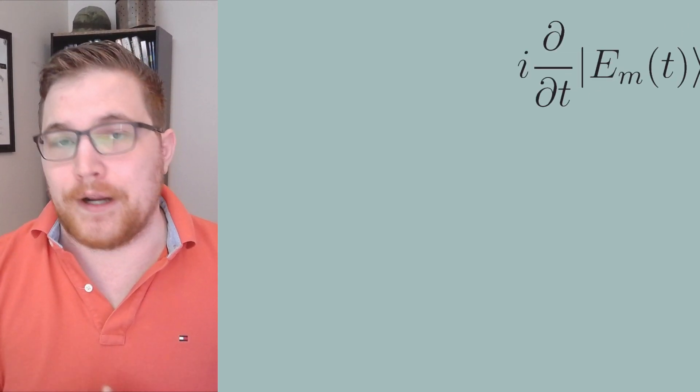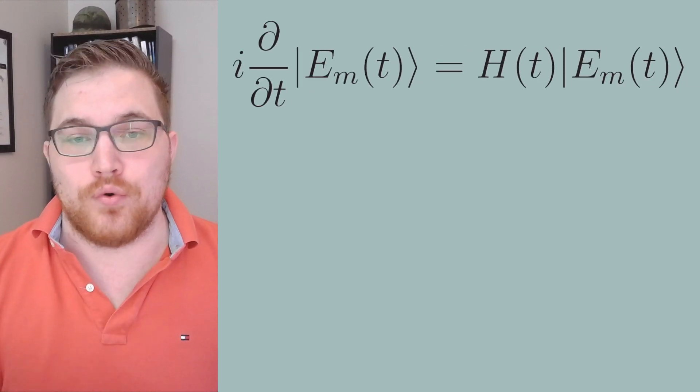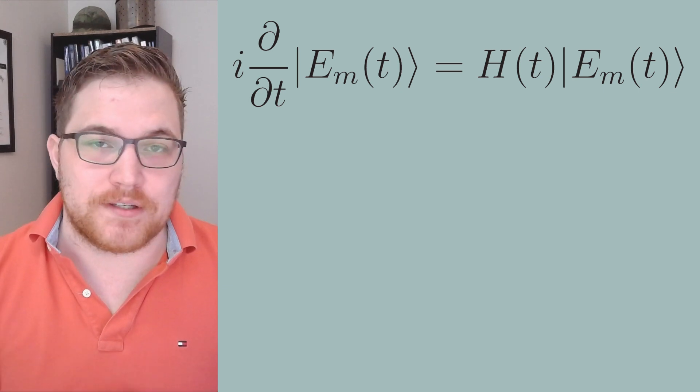So first comes first, we know that in the Schrödinger picture, the eigenstates of the free Hamiltonian now evolve in time according to this new equation. So this is just the standard Schrödinger equation.